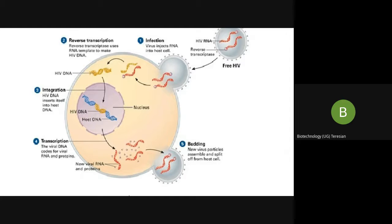The ribosomes synthesize viral proteins such as integrase and protease enzymes, and whatever else is required. Before forming a full-fledged HIV virus, certain alterations occur — all the synthesized proteins are quite large, so the protease enzyme snips these unwanted proteins and makes them shorter. They then move toward the membrane of the CD4 cells and bud off.